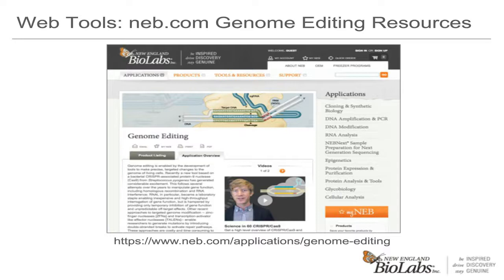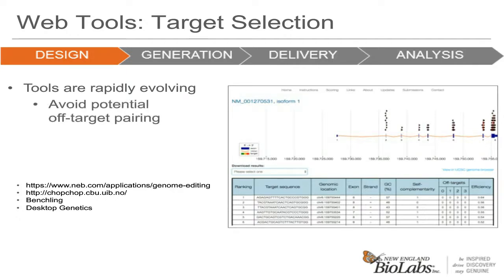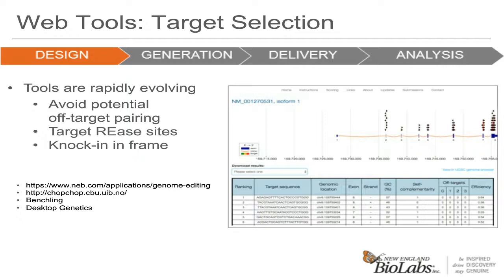The first point we want to make about nuclease designs is that the tools for design are rapidly evolving. They are mostly informatic tools that try to reduce potential off-target pairing. Some are used to target restriction enzyme sites and some are used to help design experiments for knocking in donor DNA. Below are some of the resources found on the web that can be used for target finding, including CHOPCHOP, Benchling, and Desktop Genetics, which all have great interfaces for finding target sites.